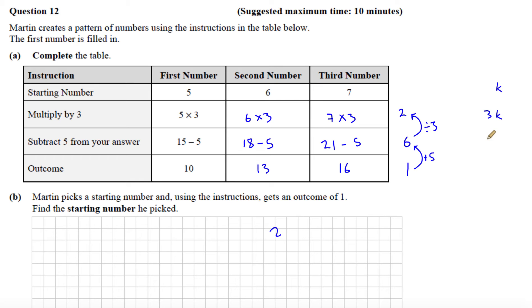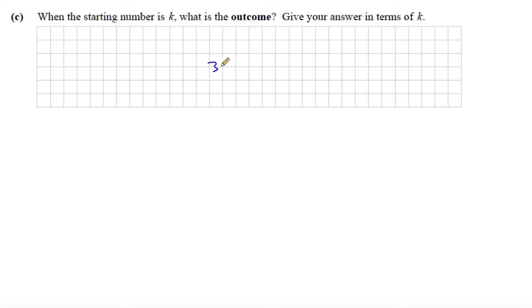Subtract 5 from your answer, and that will give me 3k subtract 5. So that's our answer in terms of k. 3k subtract 5 would be the outcome or the answer. And that's the end of the question.